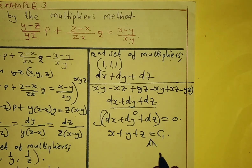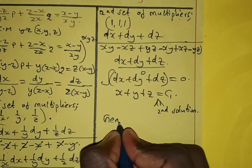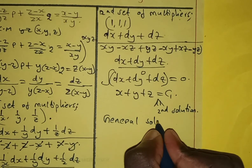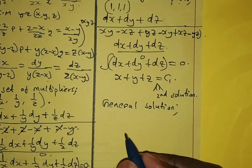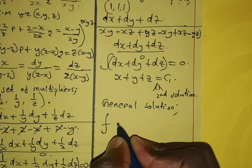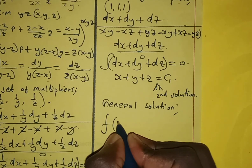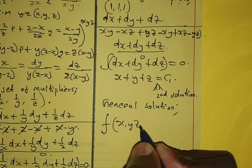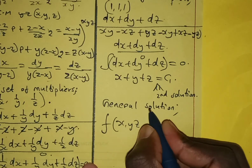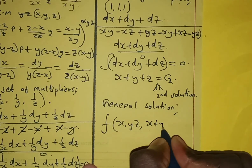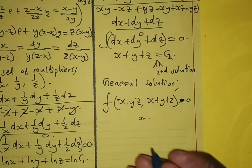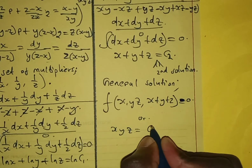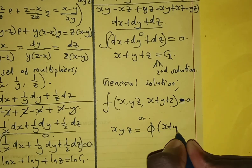Now to get the general solution, we combine the two solutions. The first solution is xyz equals c1 and the second is x + y + z equals c2. So the general solution can be written as xyz equals f(x + y + z), or equivalently as a function of both solutions.